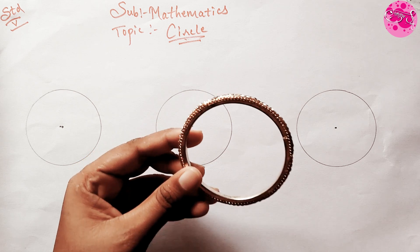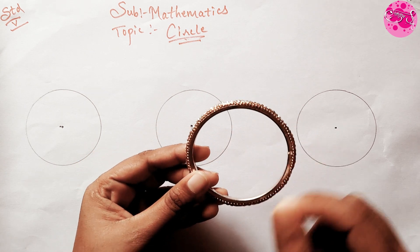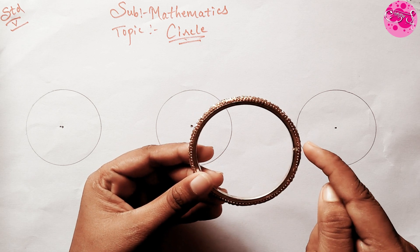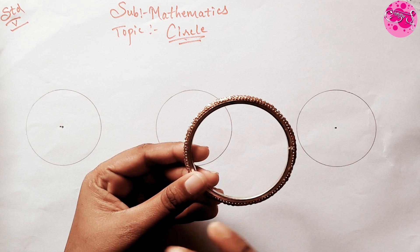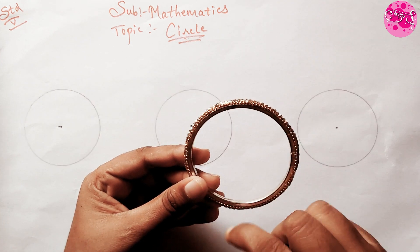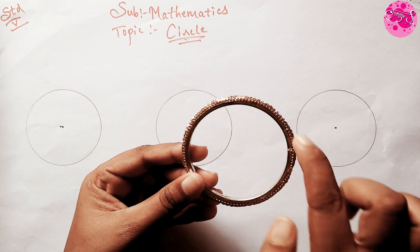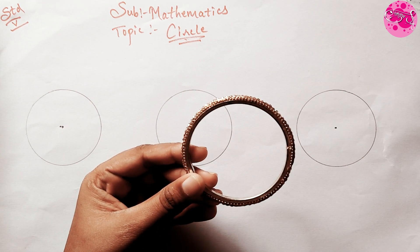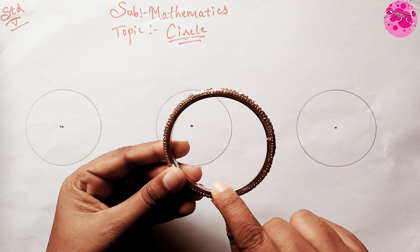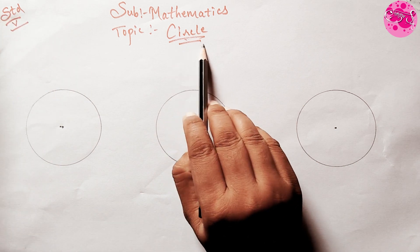So children, tell me in which shape is the bangle? It has a circular shape, or we can say round shape. So round shape is called a circle.